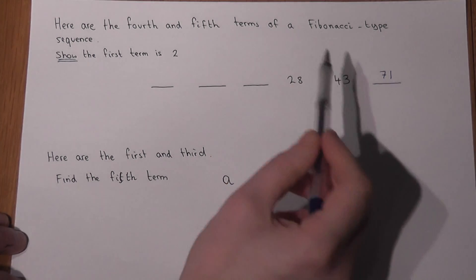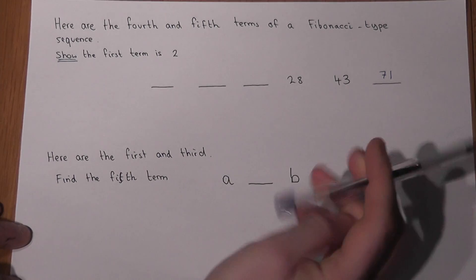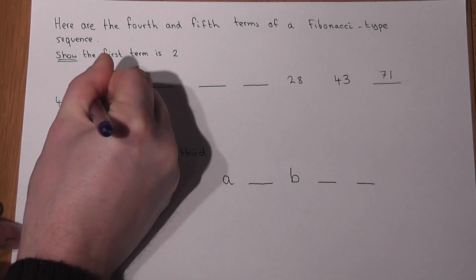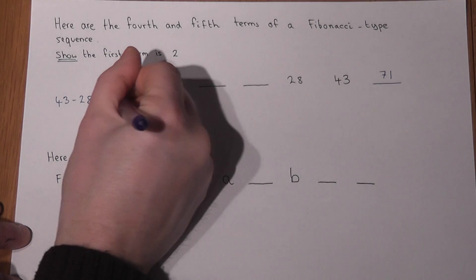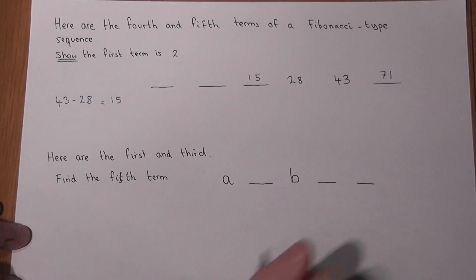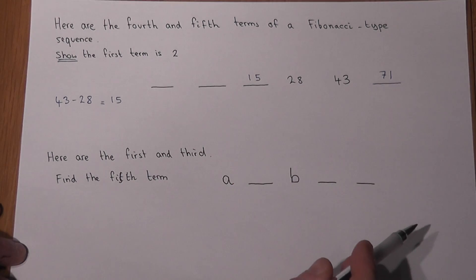So if I know the fourth and fifth, to find the third term I would do 43 take away 28, which gives me 15. So the third term has got to be 15, and to check that, 15 plus 28 does indeed equal 43.